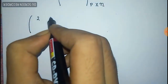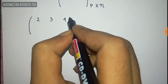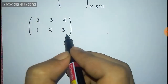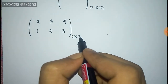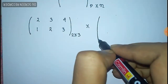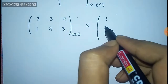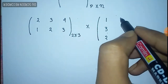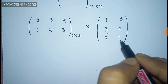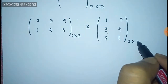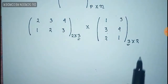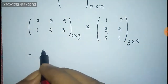There is a matrix like: 2, 3, 4 / 1, 2, 3 — the order of this matrix is 2 by 3. We multiply this matrix with another matrix: 1, 3, 2 / 3, 4, 1 — the order of this is 3 by 2. We can multiply these two matrices because the number of columns of the first matrix equals the number of rows of the second matrix — both are 3.